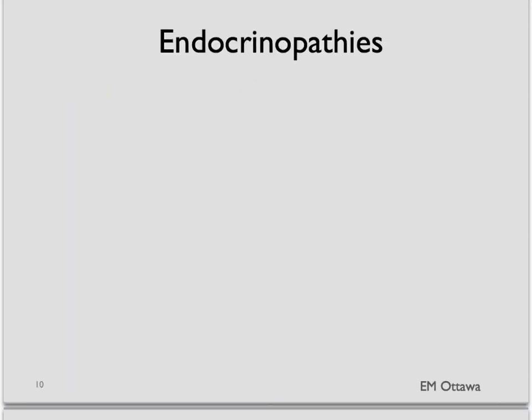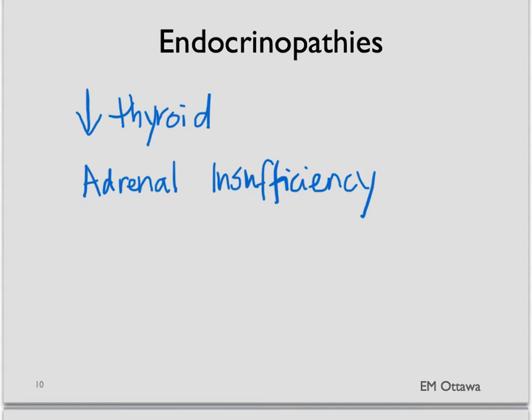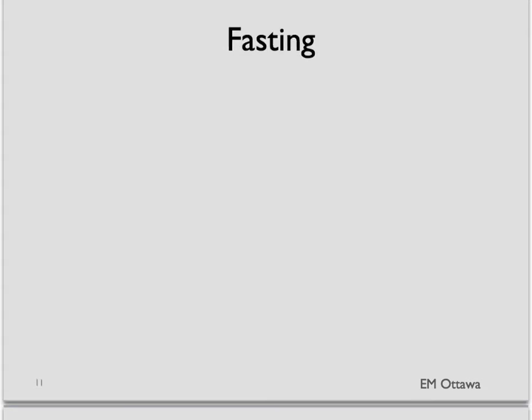Next, endocrinopathies. They include hypothyroidism, adrenal insufficiency, and rare causes such as insulinoma — where the body is producing way more insulin than needed. The third category is fasting: simply the patient has run out of fuel. Depending on the patient's reserve, sometimes a short fast can produce hypoglycemia. Patients on a steady dose of medication that decreases blood sugar can also become hypoglycemic if they have been exercising more than usual.